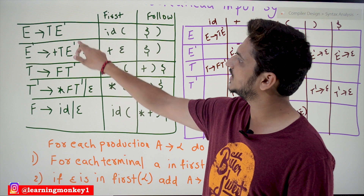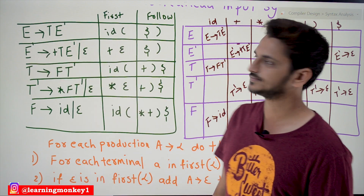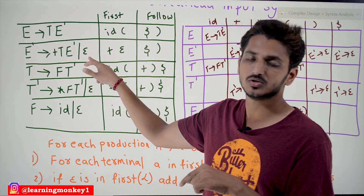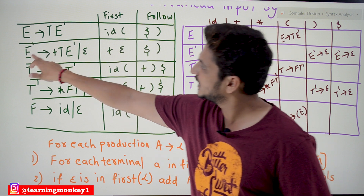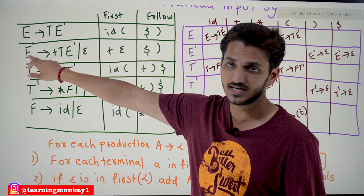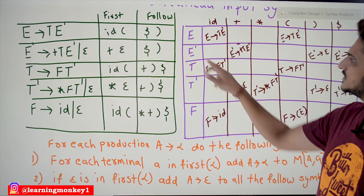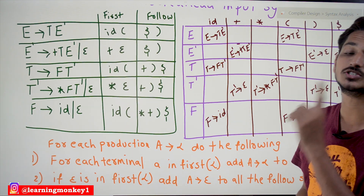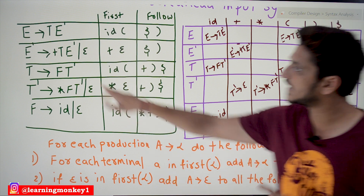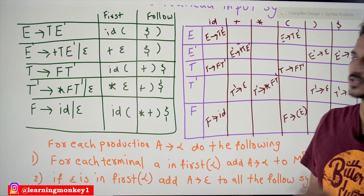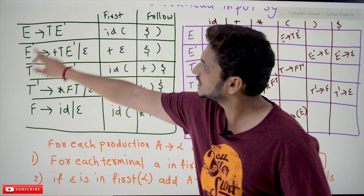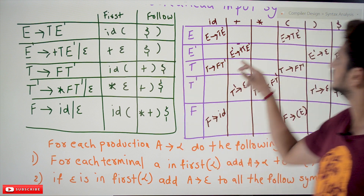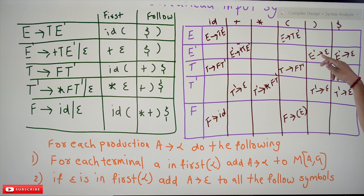Take E' → +TE' | ε. The FIRST of E' is {+, ε}. Applying Rule 1: add E' → +TE' at M[E', +]. Applying Rule 2, since ε is in FIRST(E'), add E' → ε to all FOLLOW(E') symbols. FOLLOW(E') = {$, )}. So E' → ε is added at M[E', )] and M[E', $].